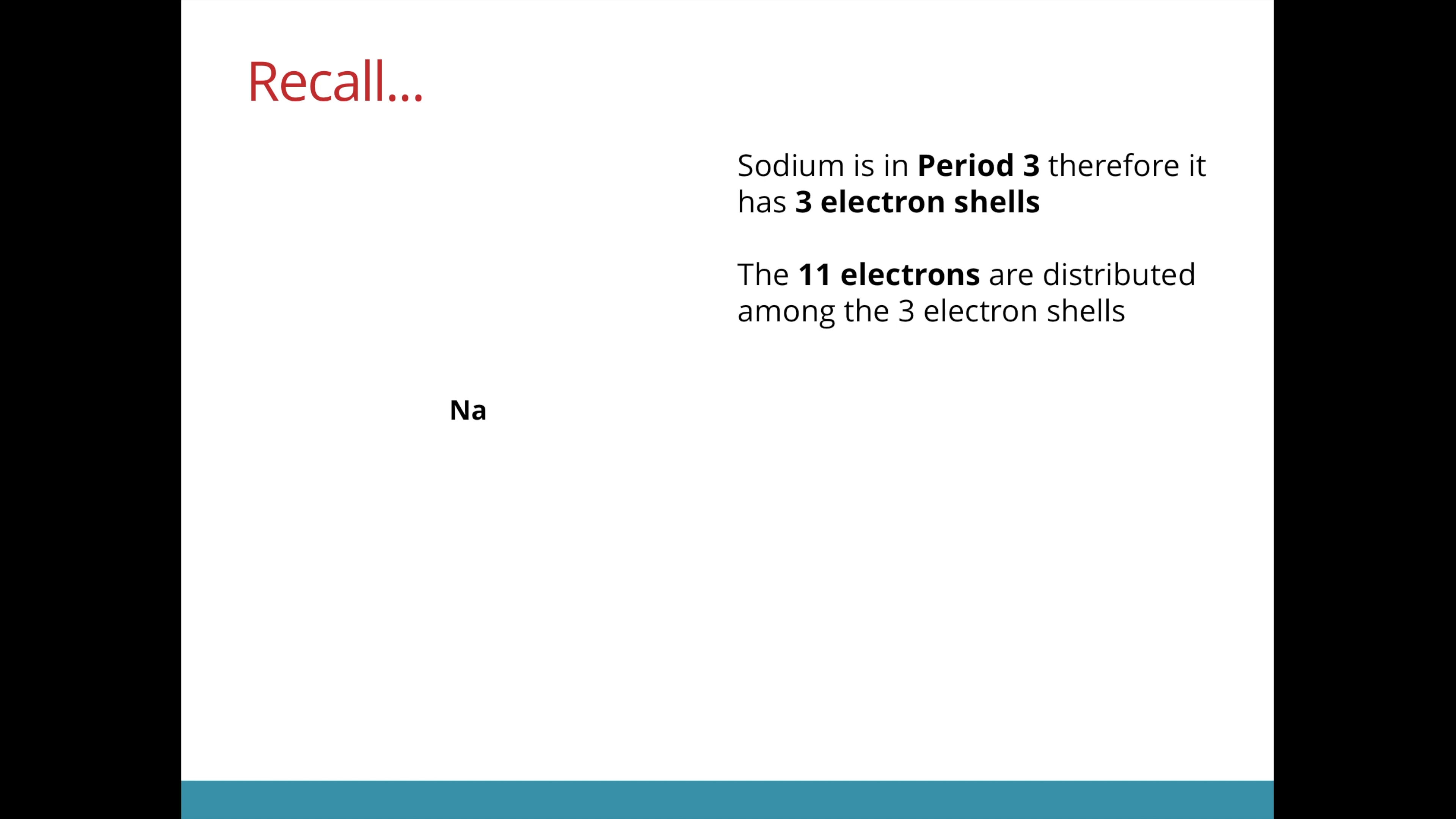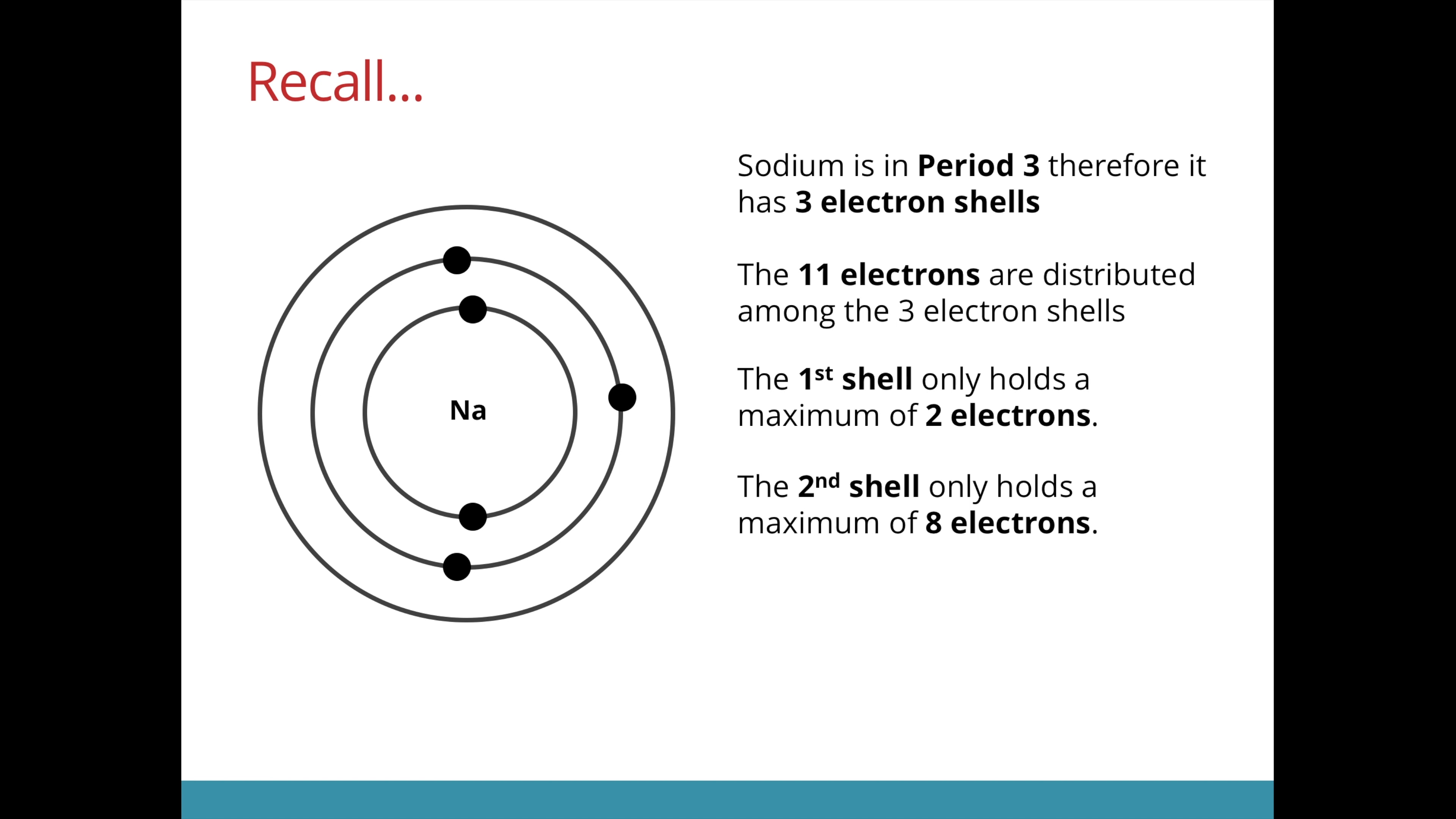Take for example the sodium atom. Sodium is in period 3, therefore it has 3 electron shells. The electrons are distributed among these 3 electron shells. The first shell can hold a maximum of 2 electrons. The next one can hold a maximum of 8 electrons. And the remaining electrons go into the valence shell. Since sodium is in group 1, it has 1 valence electron.